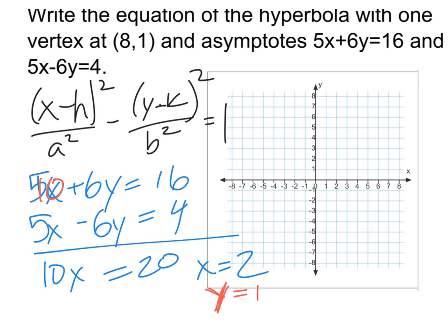So I've got the point (2,1) as the center of my box. And then it says that the vertex is at (8,1). So the vertex is over here. That does tell me that this is the center of the box, and that's a vertex, and it's going to be opening something like this.